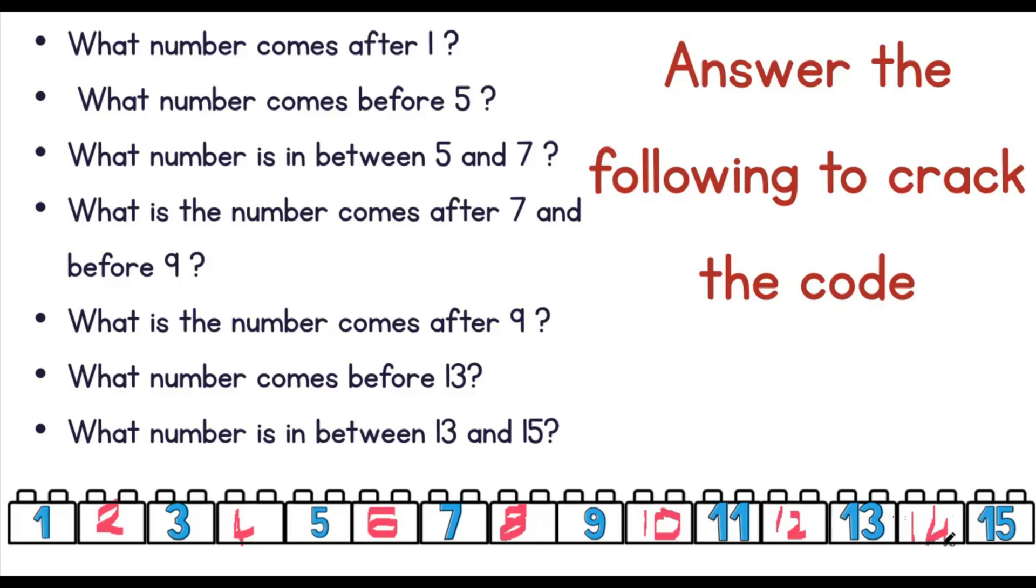What can you tell me about the pattern in the blue numbers? The blue numbers are missing one number in between. This means that these are the odd numbers from number 1 to 15.